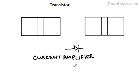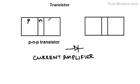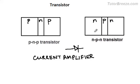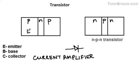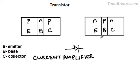We'll first look at the basics of a transistor. A transistor is made up of three layers of P and N semiconductors. You can have a PNP transistor or an NPN transistor. The first terminal is called the emitter, this is the base, and this is the collector. Similarly, in the other configuration, this is the emitter, the base, and the collector.